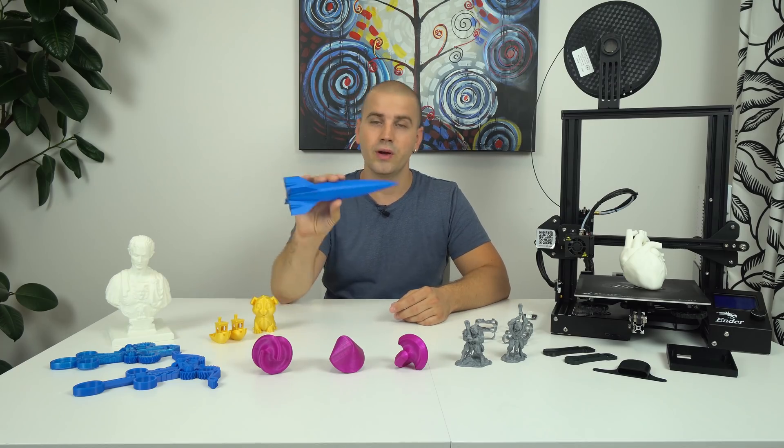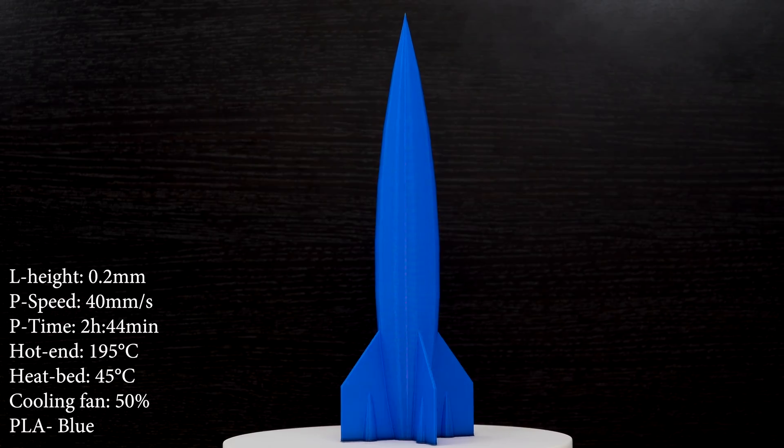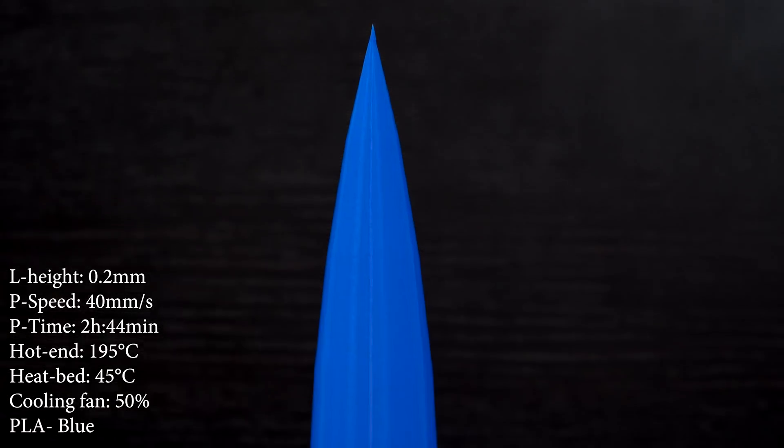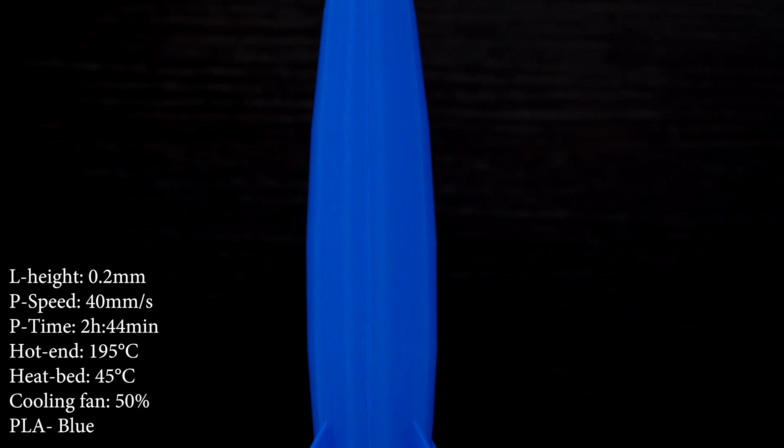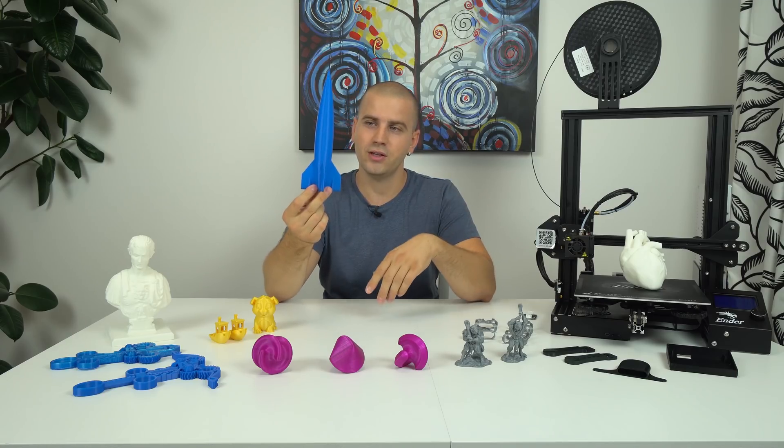Next, I printed this rocket to quickly test the alignment on the Z-axis. The print looks great, there is no sign of any layer separation or misalignment and there is no sign of Salmon Skin. Great results.